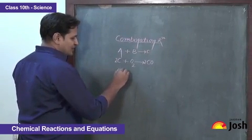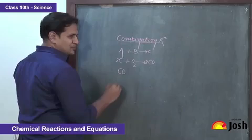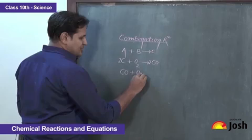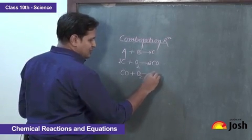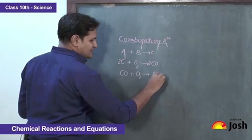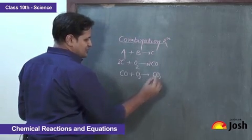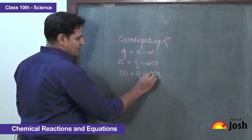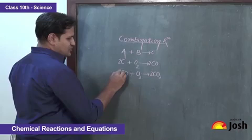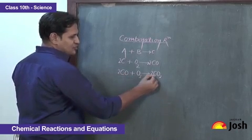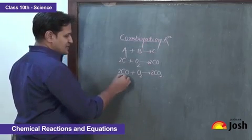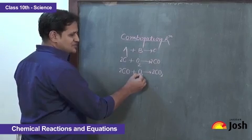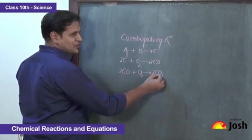Example 2: carbon monoxide as a compound reacts with oxygen as an element, forming carbon dioxide as a single compound product. We balance it — we have two moles of carbon and four moles of oxygen. In this case, a compound carbon monoxide combines with element oxygen to form compound carbon dioxide.